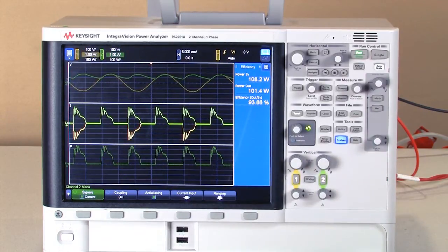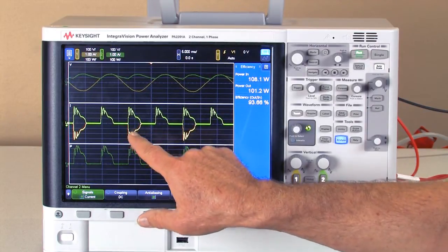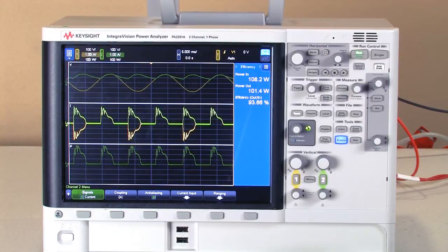The middle set of traces are the current waveforms. Notice that the input current waveform is bipolar and the output is unipolar with the rectification that's going on.